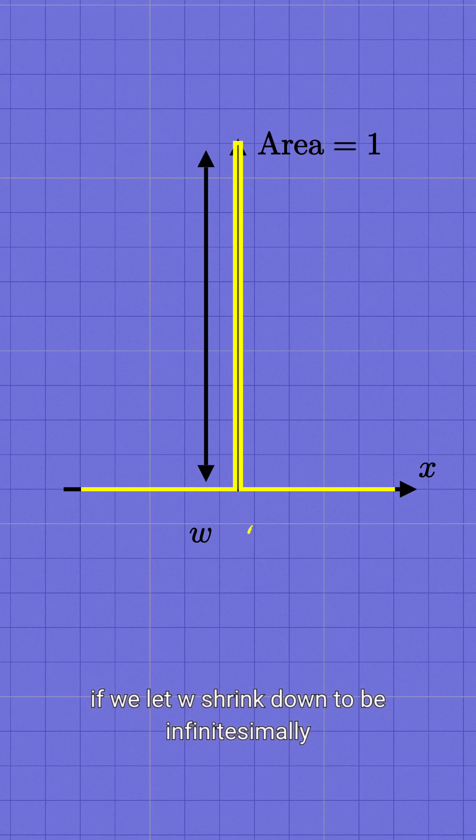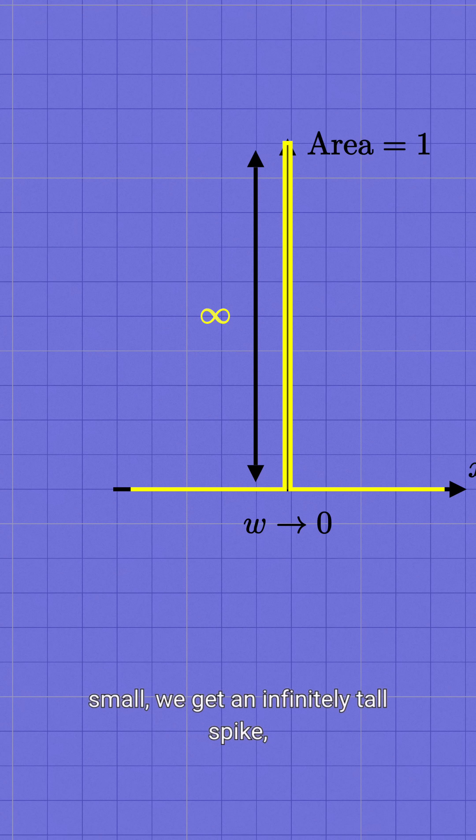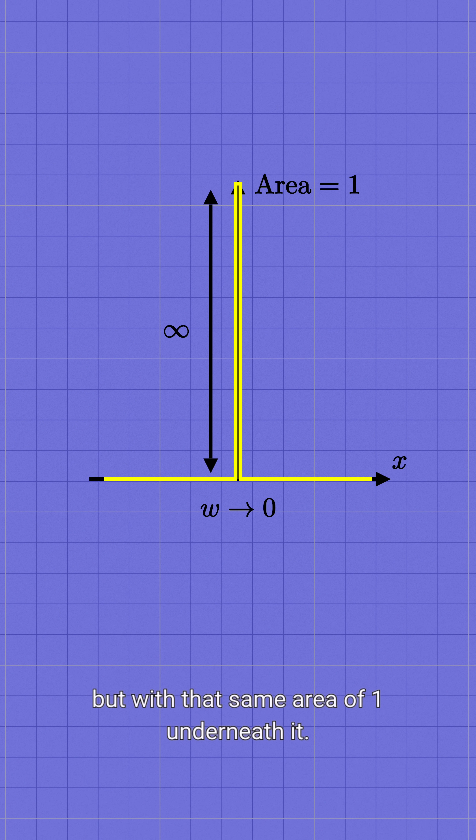In particular, if we let w shrink down to be infinitesimally small, we get an infinitely tall spike, but with that same area of 1 underneath it.